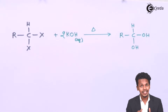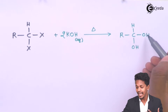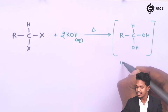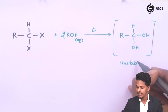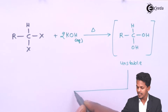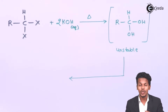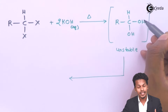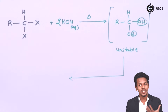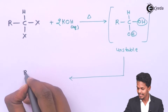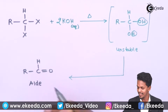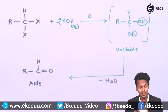This diol product is not very stable because both hydroxyl groups are attached to the same carbon atom. Therefore, it is an unstable intermediate. This unstable product is converted into a stable product by removing a water molecule (H₂O), giving us RCH=O, which is an aldehyde.